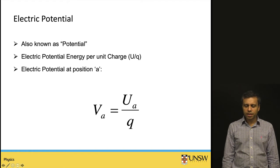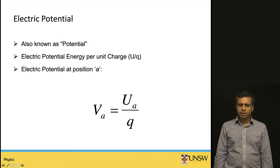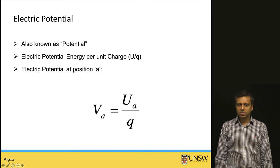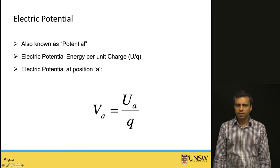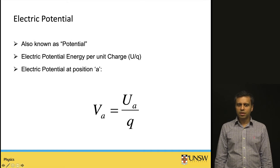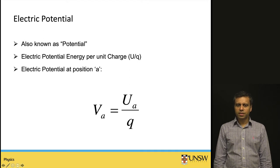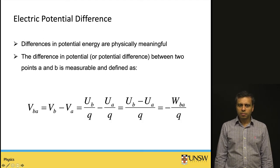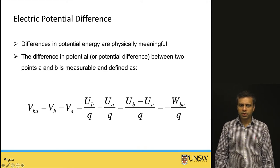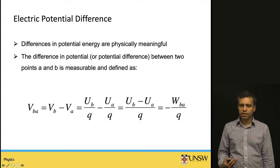Now let us define electric potential. Electric potential, or simply potential, is the electric potential energy per unit charge. It is denoted by V, so V_A — the electric potential at position A — equals the potential energy at A divided by the charge. Differences in potential energy are physically meaningful, and the potential difference can be measured, for example in an electrical circuit.